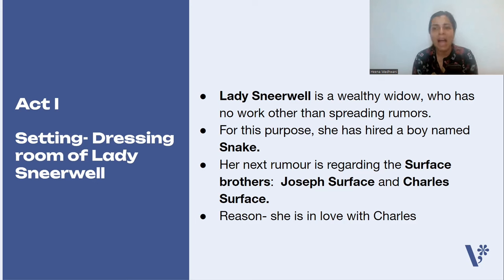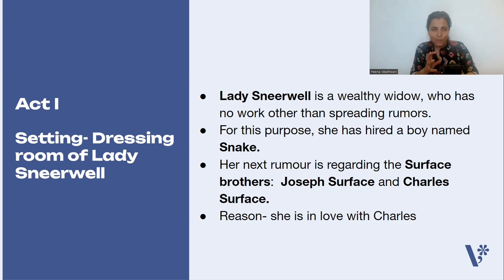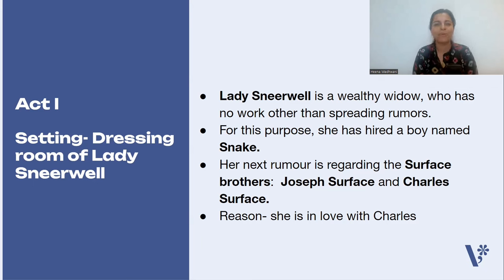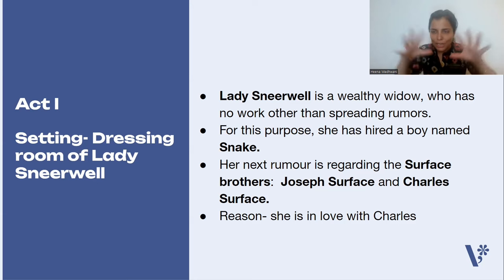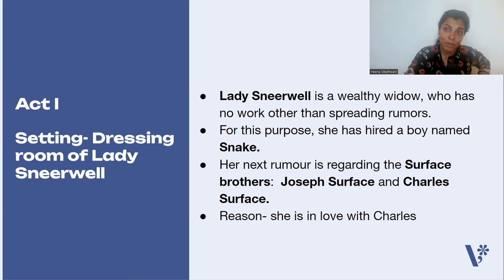For this purpose, she has hired a boy who is very greedy, whose name is Snake. Snake denotes being a vicious character who is greedy, wants people to fight, and works for money for Lady Sneerwell. The next rumor that Lady Sneerwell is going to spread is regarding the Surface brothers. There are two Surface brothers — Joseph Surface, the elder one, and Charles Surface, the younger one. The reason is that she loves Charles and wants Charles to herself.